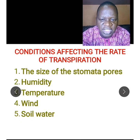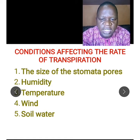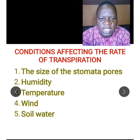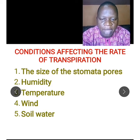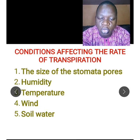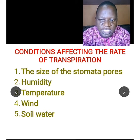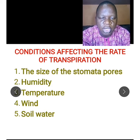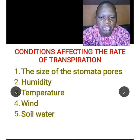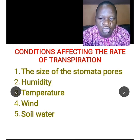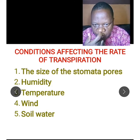Now let's look at the conditions that affect the rate of transpiration. The first is the size of the stomata pores — the stomata pore is the space through which water escapes into the atmosphere. When the stomata is turgid — that is, swollen with water — it opens and water escapes. When the water has escaped, the stomata closes, controlling the amount of water lost.